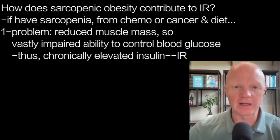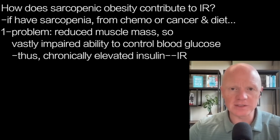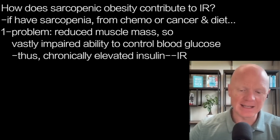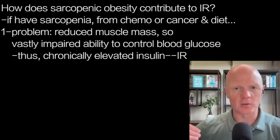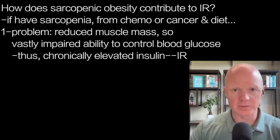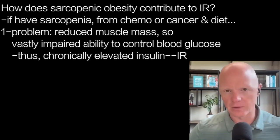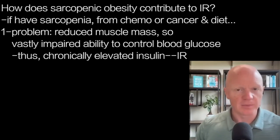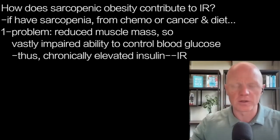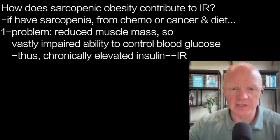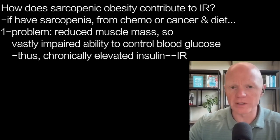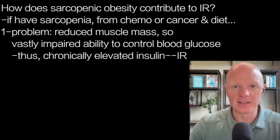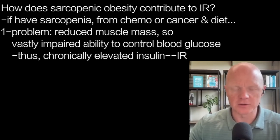Now let's actually flip the paradigm and talk about how sarcopenic obesity contributes to insulin resistance. Let's imagine a person developed sarcopenic obesity through a different pathology — maybe as a consequence of chemotherapy or the wasting that comes from cancer combined with a poor diet. The first problem is obviously reduced muscle mass. With less muscle mass comes a vastly compromised ability to control blood glucose. With that comes chronically elevated insulin, which is going to contribute to insulin resistance. So the loss of muscle contributes to insulin resistance.